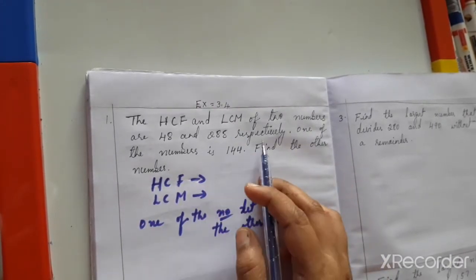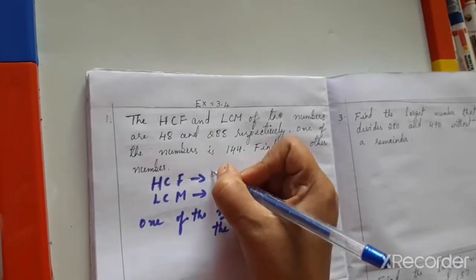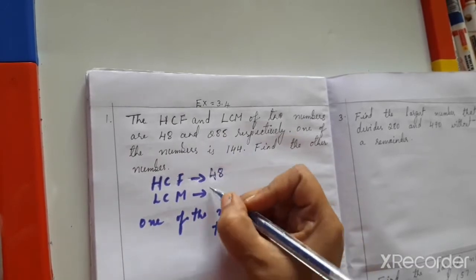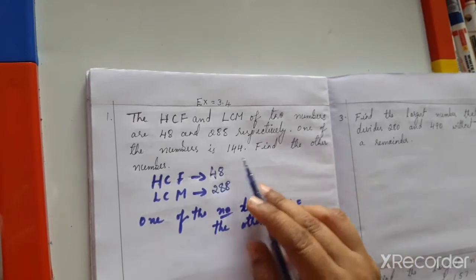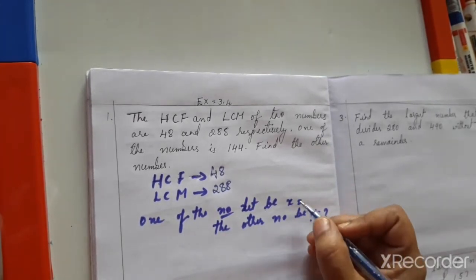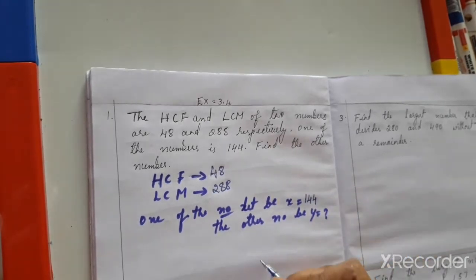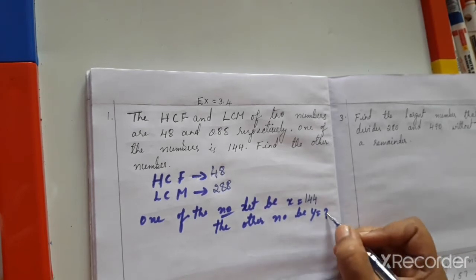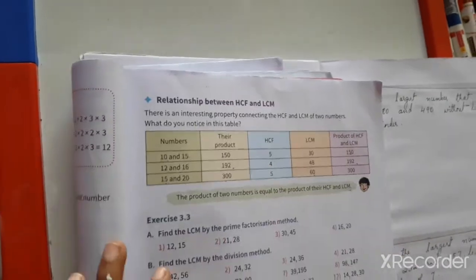So HCF is 48 and LCM is 288. One of the numbers — let that be x — is 144. The other number, let that be y, is what we have to find. According to the property, we will now apply the relationship between the numbers.